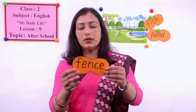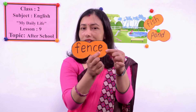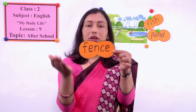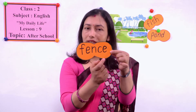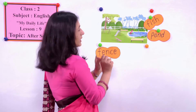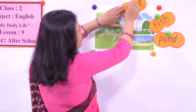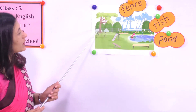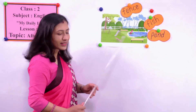Now look at another word. F-E-N-C-E. How do you read the word? Fence. Repeat after me: fence. One more time: fence. Now let's find out fence. Where can you see fence here? Over here - you can read the word over here and we will point the fence here. This white one, this is the fence of our garden.